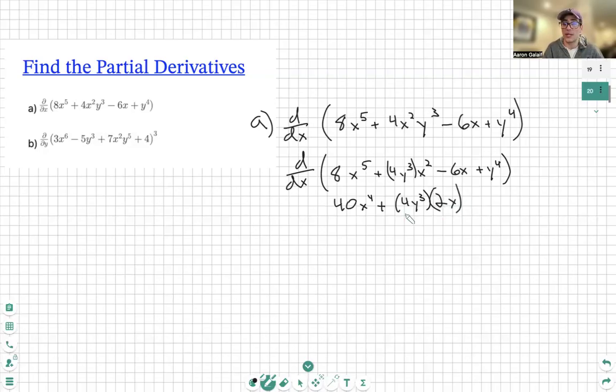So we just have to do the power rule of x squared, which just becomes 2x. Yes, we are going to have to multiply these two together. Next, the derivative of negative 6x is just negative 6. And the derivative of y to the fourth is just 0, because y in this situation is a constant. And the derivative of a constant is 0.